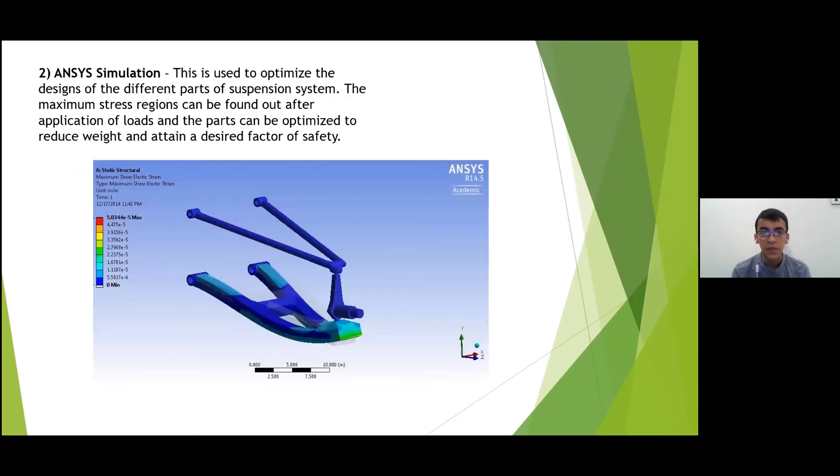The second type of simulation is ANSYS simulation that is used to optimize the parts of the suspension system. We can find out the maximum stress regions and after entering the loads acting on the different parts we can reduce weight or attain the desired factor of safety.